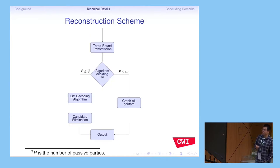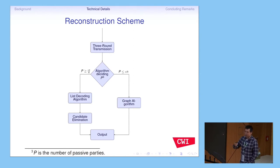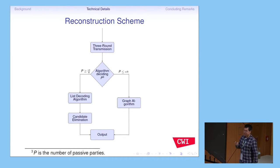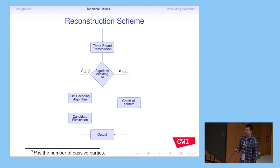In our reconstruction scheme, because we are in the Russian adversary model, if parties send their shares to the reconstructor in only one round, the adversary can learn everything about the honest parties' shares, which is not safe. So we separate reconstruction into three rounds. We send back the share, then apply an algorithm. In our paper, we define passive corrupted parties and active corrupted parties. We check whether the number of passive parties is larger or smaller, and take two different routes to reconstruct the secret.